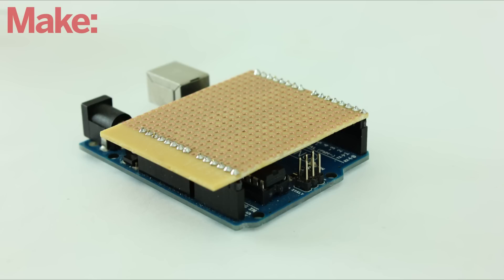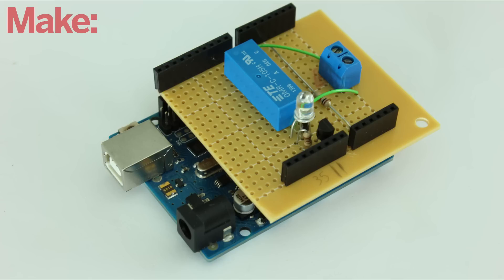Here's a few simple examples. To create a relay shield, all you have to do is start with a protoshield and build a basic relay circuit on top of it.